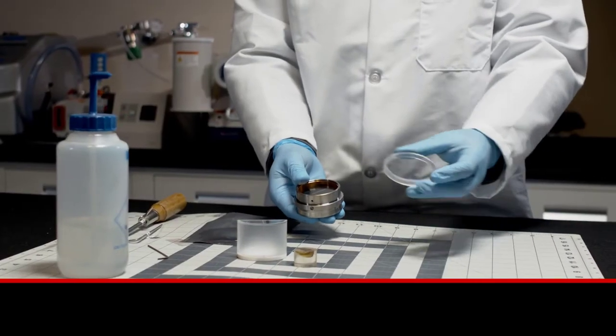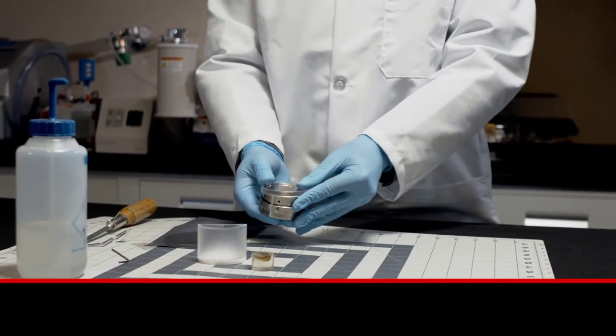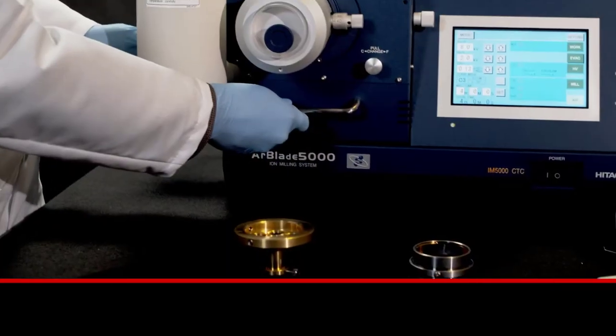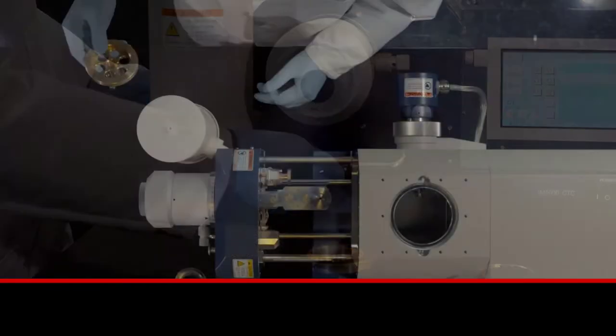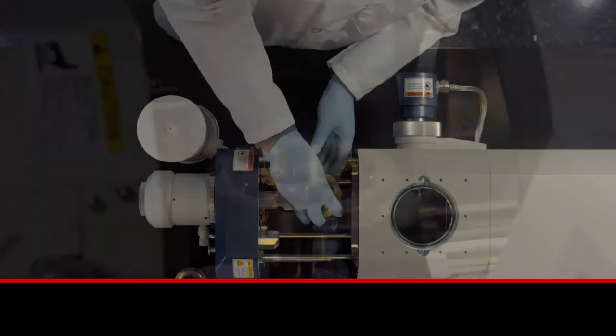Cross section and flat milling can be performed on the same holder designed for scanning electron microscopy. After milling, the sample holder can be placed directly into the SEM for analysis.